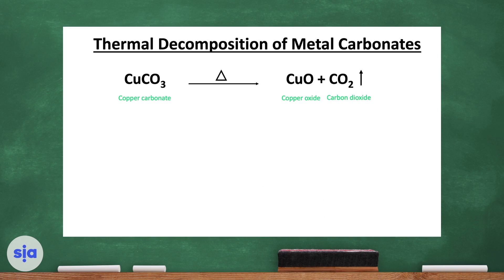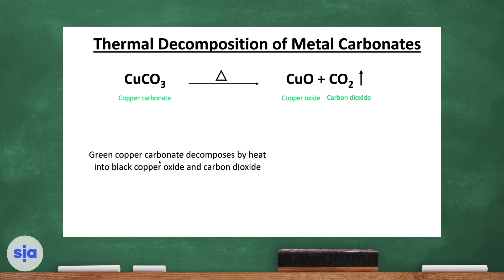Now, thermal decomposition of metal carbonates. Copper carbonate is the best example — it can be decomposed by heat, giving copper oxide and carbon dioxide gas. The green copper carbonate decomposes by heat, giving black copper oxide while carbon dioxide gas evolves.